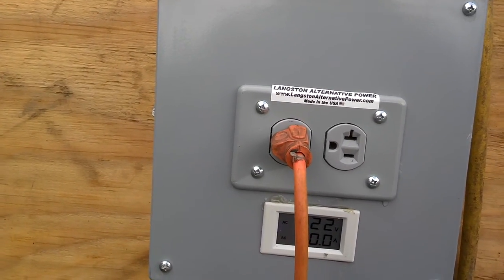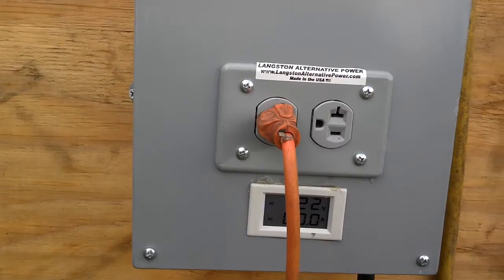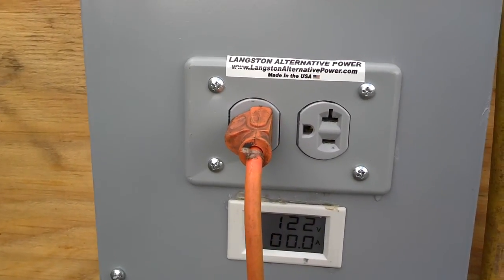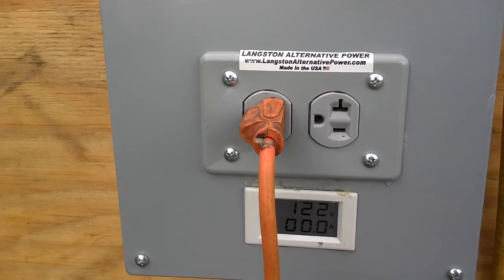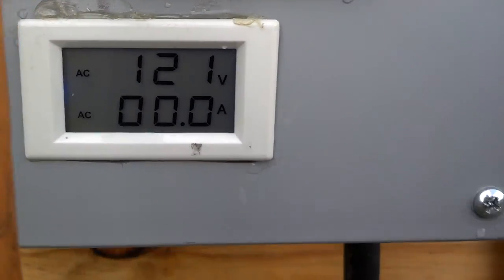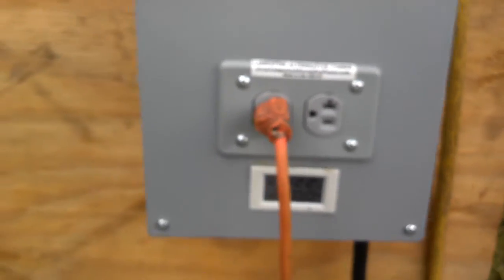Hey, this is Spencer at Langston's Alternative Power doing a test on a low head hydro running at approximately five to five and a half feet of head, and we're producing 120 volts. This is my inverter. I did a video on this earlier but didn't have enough head for the right source.